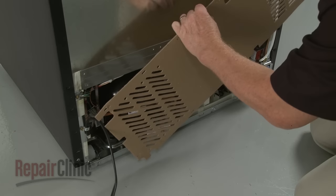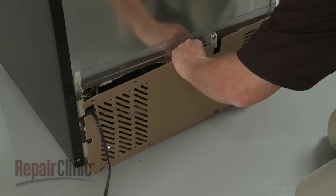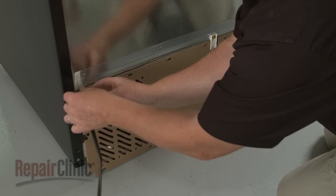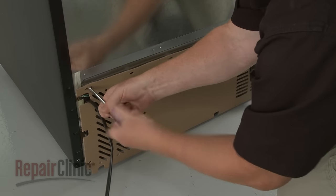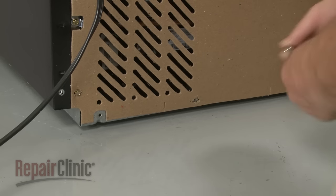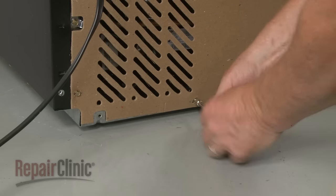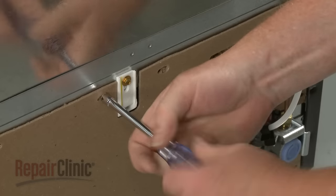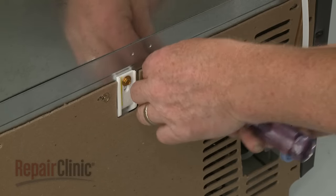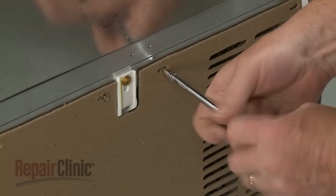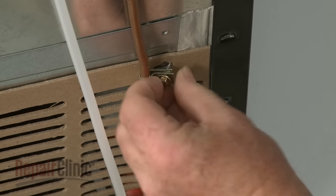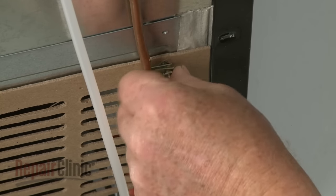Replace the rear access panel or cover and secure it with the screws. Align the strain relief clamp for the copper tubing and secure it with the appropriate rear panel screw.